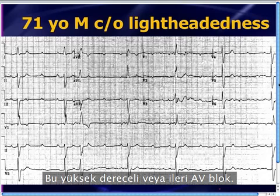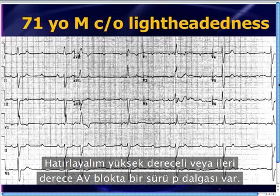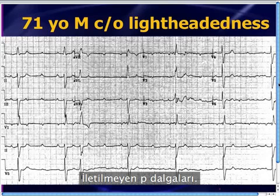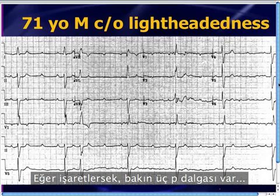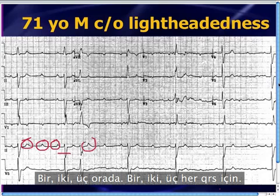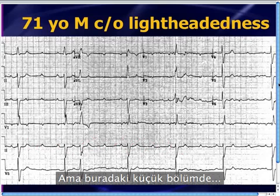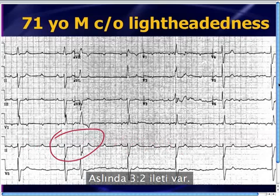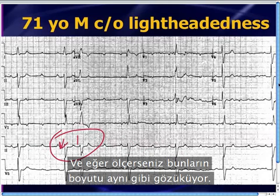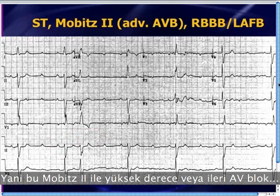This is the high-grade or advanced AV block. Remember, high-grade or advanced AV block is when there's a whole bunch of P waves not being conducted. If we map this out, there are three P waves for every QRS — a 3-to-1 ratio. But in one small section there's actually 3-to-2 conduction, and using calipers, the PRs appear fairly similar in size. So this is a high-grade or advanced AV block with Mobitz 2.